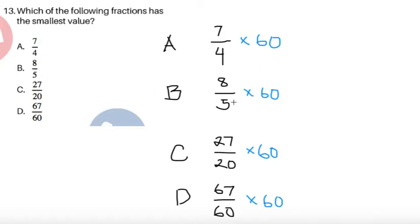Note how 4, 5, 20, and 60 have LCM of 60. So we can multiply 60 to all of these four and end up with a whole number which can easily compare. For 7 fourths times 60, cancel the 4 and 60. So it becomes 4 divided by 4 is 1, 60 divided by 4 is 15. So I'm going to compare 7 times 15, which is equal to 105.